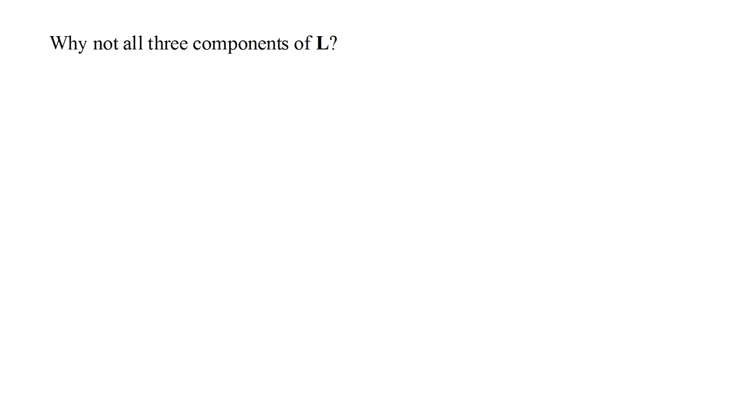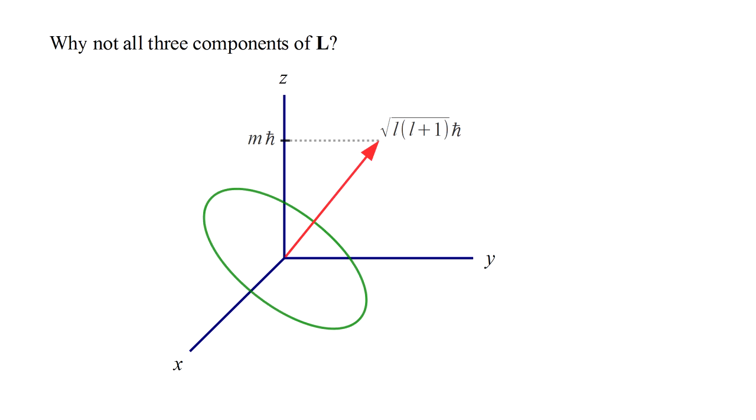Now, why can't we determine all three components of angular momentum? Our theory tells us that we can know the magnitude of the angular momentum vector and its component along the z-axis.